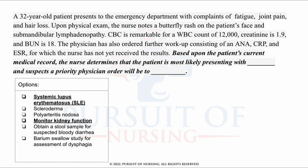The nurse determines that the patient is most likely presenting with lupus, and suspects that a priority physician order will be to monitor kidney function. Lupus is a systemic inflammatory disease — classic findings include that butterfly rash. Lupus can affect and really damage the kidneys, so it is always important in a patient with lupus to monitor kidney function.